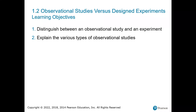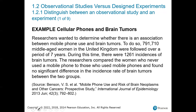We are going to work on section 1.2 now. This section covers the different types of studies — whether we have an observational study or a designed experiment. We're going to distinguish between the two, and then look at a few different types of observational studies as well. I'll read through some examples and then explain what they are.